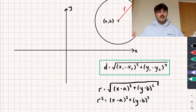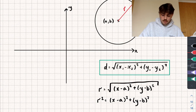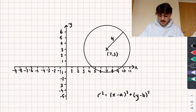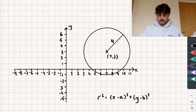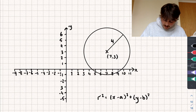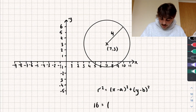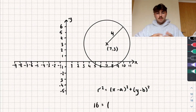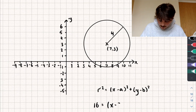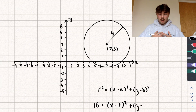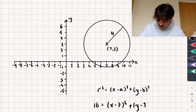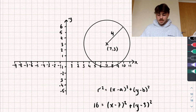Let's look at some concrete examples. A circle with radius 4 centred at the point (7, 3): the radius squared is 16, so the equation is (x − 7)² + (y − 3)² = 16. That's the equation of that circle.